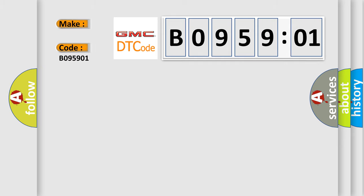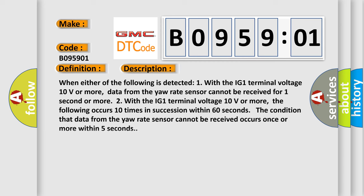GMC car manufacturers. The basic definition is lost communication with yaw rate sensor module. And now this is a short description of this DTC code.